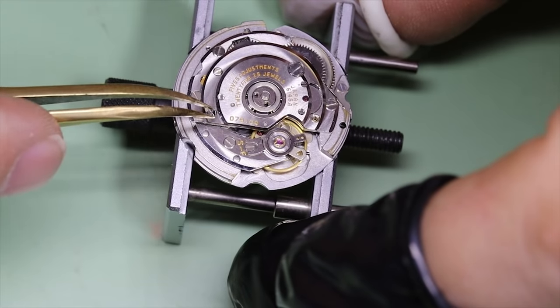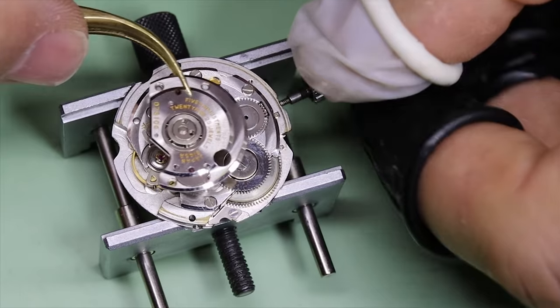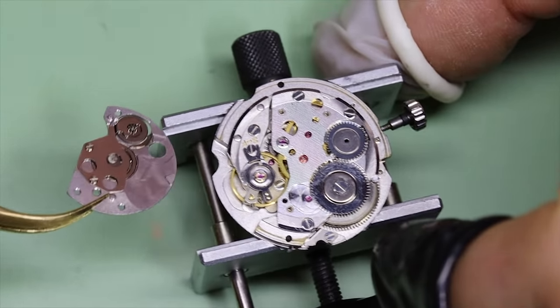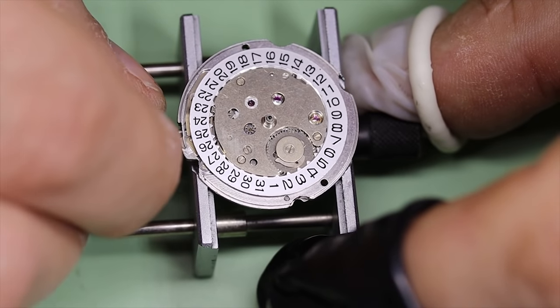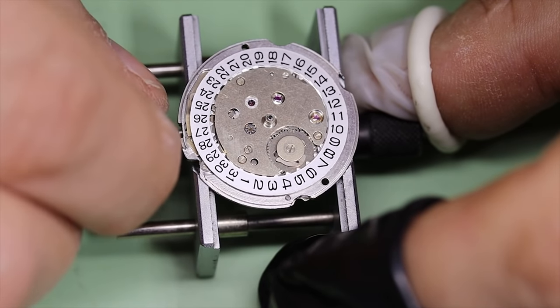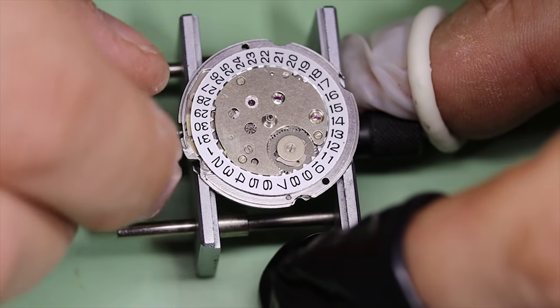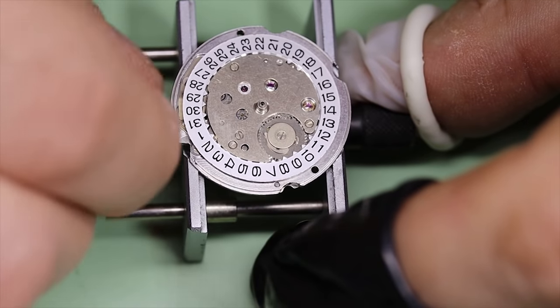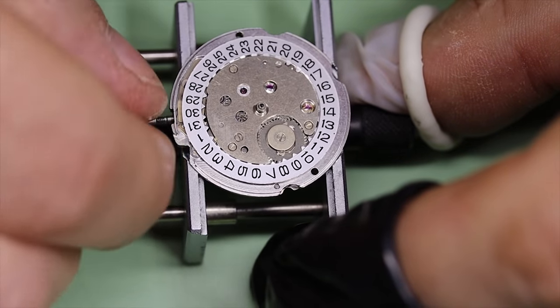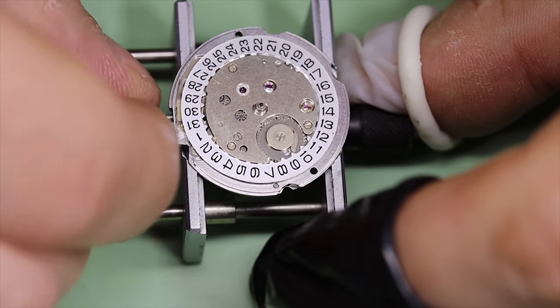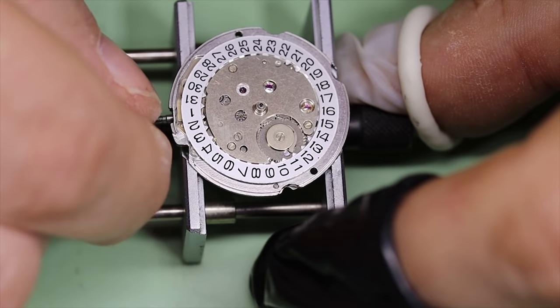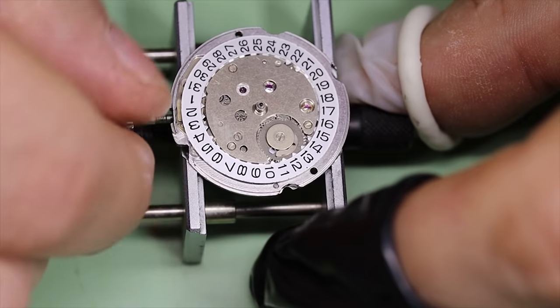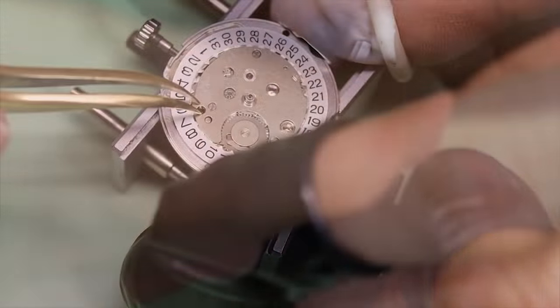So we're first going to take off the automatic module. This design is quite similar to Rolex in a lot of ways - you have the automatic module right under the rotor and then the standard movement underneath. The quick set date works nicely, and the switchover has this little spring that acts both to snap the date over quickly, but also as a safety mechanism, meaning that nothing bad will happen if a user uses the quick set date as the automatic changeover is happening.